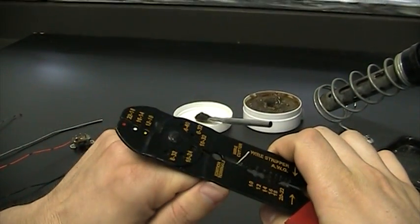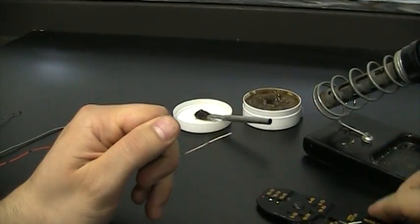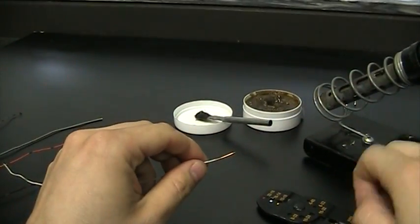You pinch a little bit and pull back. That removes the outer casing and leaves you with the conductive wire on the inside.